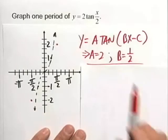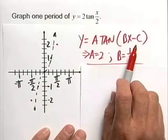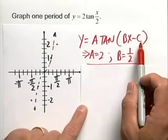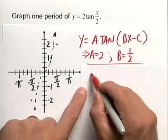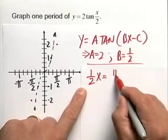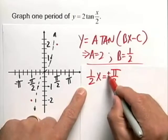Now that we have a and b, let's go ahead and find our vertical asymptotes. The formula for our vertical asymptotes is bx minus c equal to pi halves. Now since c is equal to 0 and b is equal to 1 half, we can simply write this as 1 half x being equal to pi halves. And I'm going to sneak in a plus or minus here.